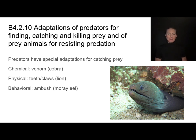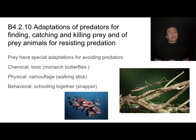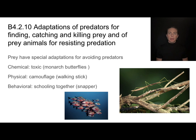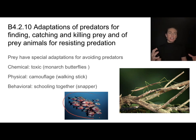Of course, prey have special adaptations to avoid being the food. Some have chemical adaptations — the monarch butterfly produces a toxin that would kill a predator, which is a great way to avoid being eaten. Some have physical adaptations, like this walking stick bug, which is great at camouflage and looks just like a stick. And others have behavioral adaptations — small fish like these snapper can school together and look like a larger fish, which is a great example of a behavior to avoid getting eaten.